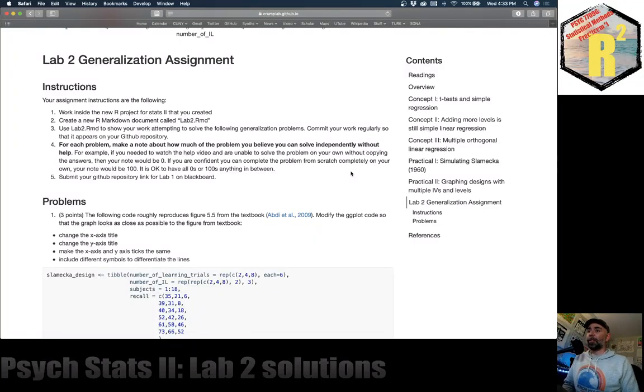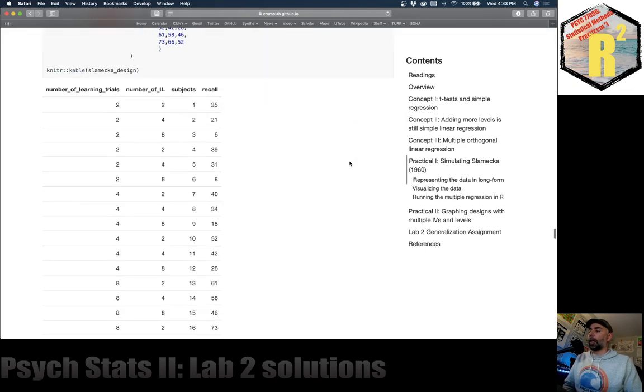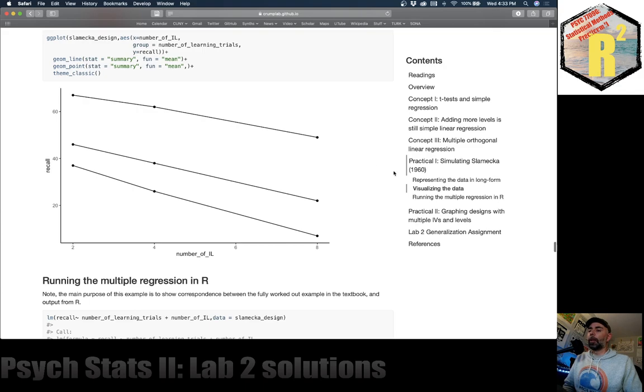All right, let's do the generalization assignment for multiple orthogonal linear regression. Don't worry, it's mostly about making graphs. So the first problem is we want to take this code that is from the lab, and it produces this graph right here. And we want to produce the graph from the textbook instead. So make it prettier, make the x and y axis look better, make the lines represent the different levels of that factor more easily.